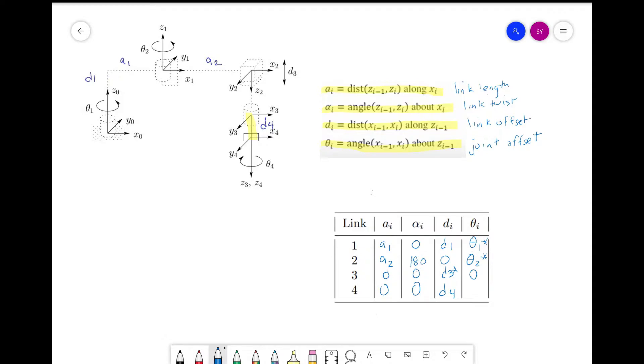And for theta, we know that this is a revolute joint. So we have a rotation of theta_4, and we mark it with a star. There's no additional rotation needed between x_3 and x_4 because they're already aligned.